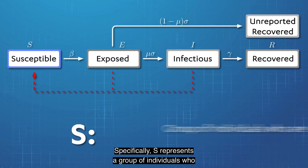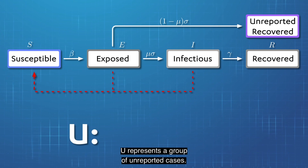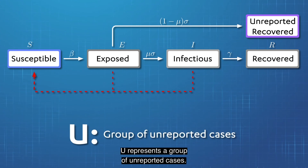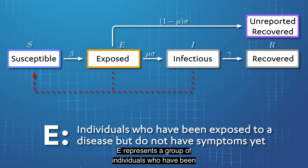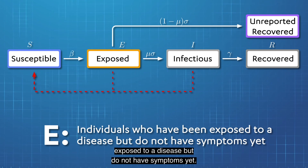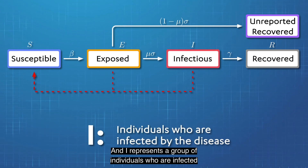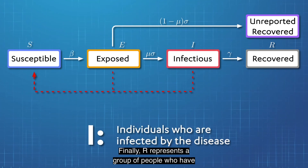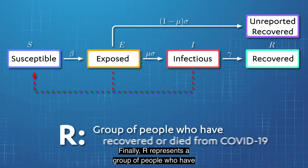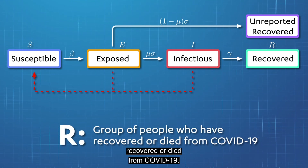S represents a group of individuals who are susceptible to a disease. U represents a group of unreported cases. E represents a group of individuals who have been exposed to a disease but do not have symptoms yet. I represents a group of individuals who are infected by the disease. Finally, R represents a group of people who have recovered or died from COVID-19.